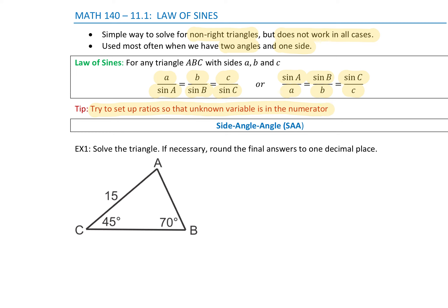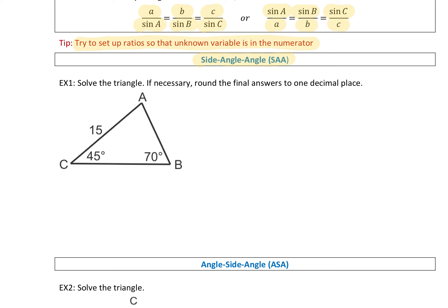The best case for using Law of Sines is when you have a side, an angle, and an angle — SAA. In Example 1, going around the triangle, I start with side 15, then an angle of 70 degrees, then an angle of 45 degrees. That's side-angle-angle, perfect for Law of Sines. Since I have two angles, I can find angle A by taking 180 degrees and subtracting the other two: 180 minus 45 minus 70 gives me angle A equal to 65 degrees.